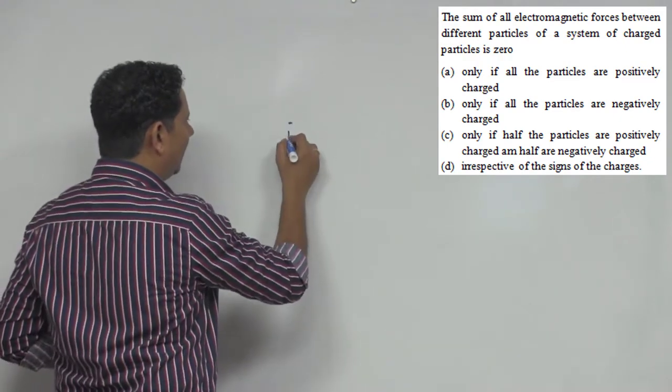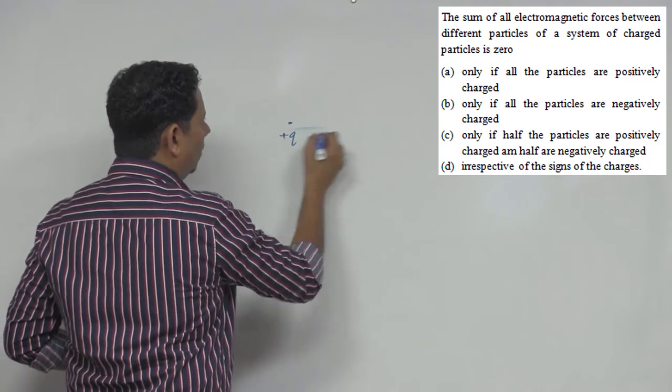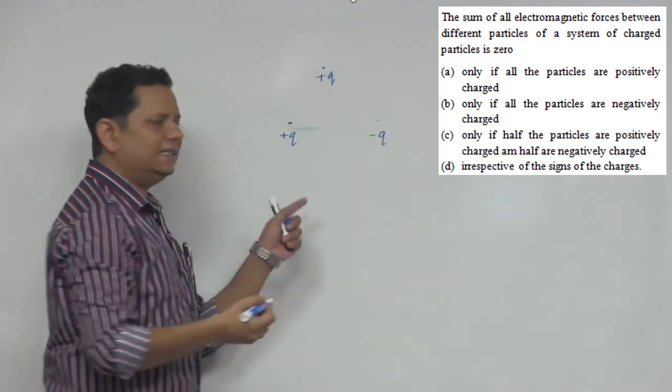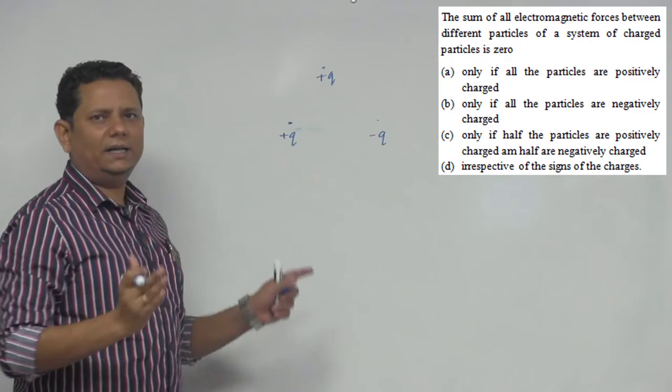For example, this one is positive charge plus Q and this one is minus Q charge and let's say here is plus Q charge. These three charges are at any distance. Equilateral triangle can be any different.